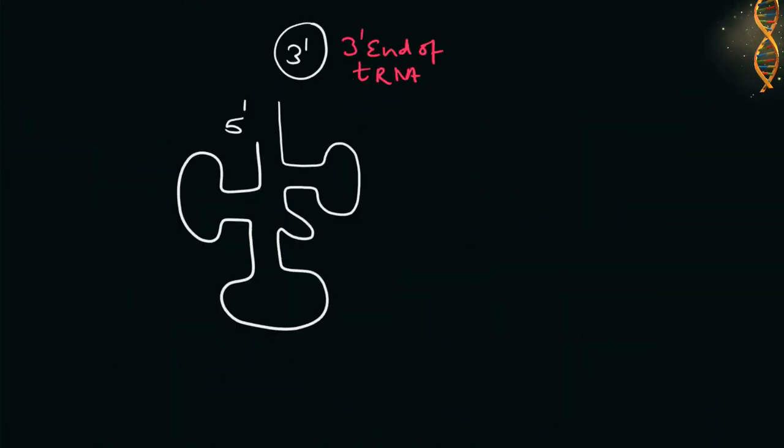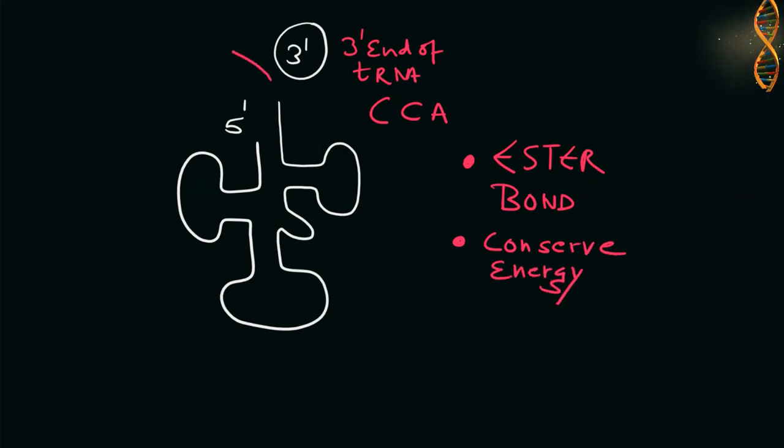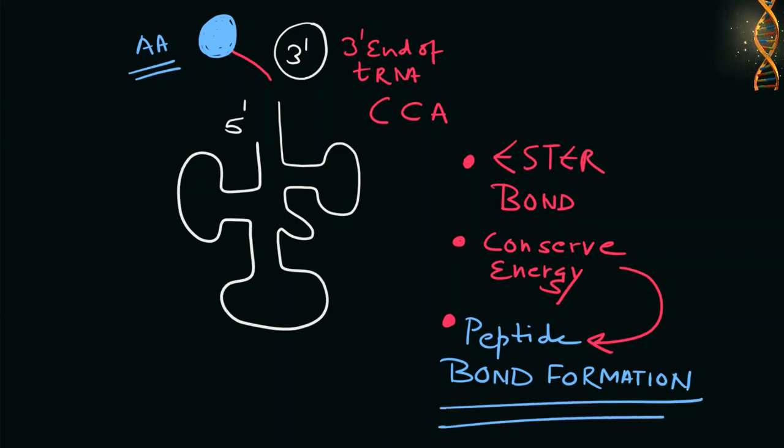The amino acid is coupled at the 3' end of tRNA molecule via an ester bond. The formation of the ester bond conserves a considerable part of the energy from the activation reaction. This stored energy provides the majority of the energy needed for peptide bond formation during translation.